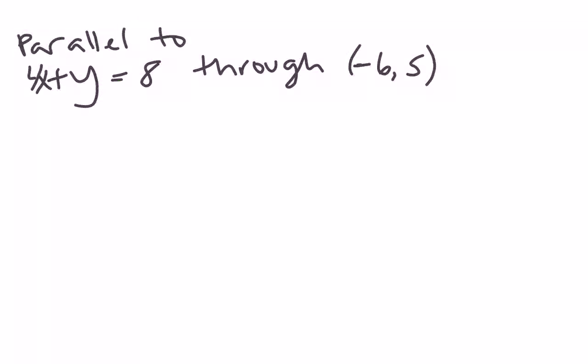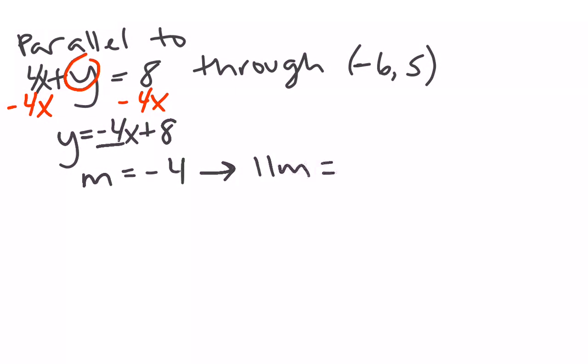Looking at the next parallel problem, my y is not by itself, so the first thing I need to do is subtract 4x. And now we go through the same process. My original slope is negative 4. I need my parallel slope, which is going to be the same thing, negative 4.